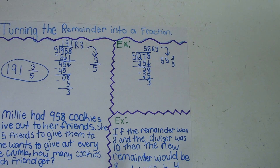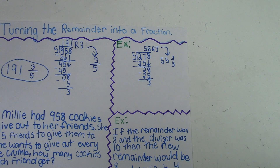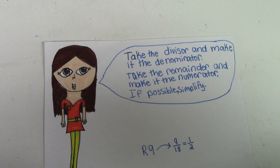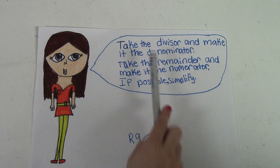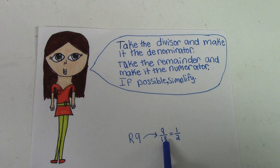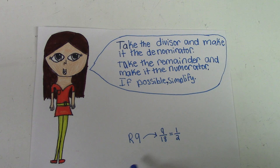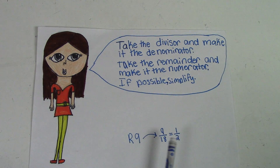Here's another example: if the remainder was 8 and the divisor was 10, then the new remainder would be 8 tenths, which simplifies to 4 fifths. This is how you do it: take the divisor and make it the denominator; take the remainder and make it the numerator. If possible, simplify. So remainder 9 over divisor 18 would give you 9 eighteenths, which simplifies to 1 half.